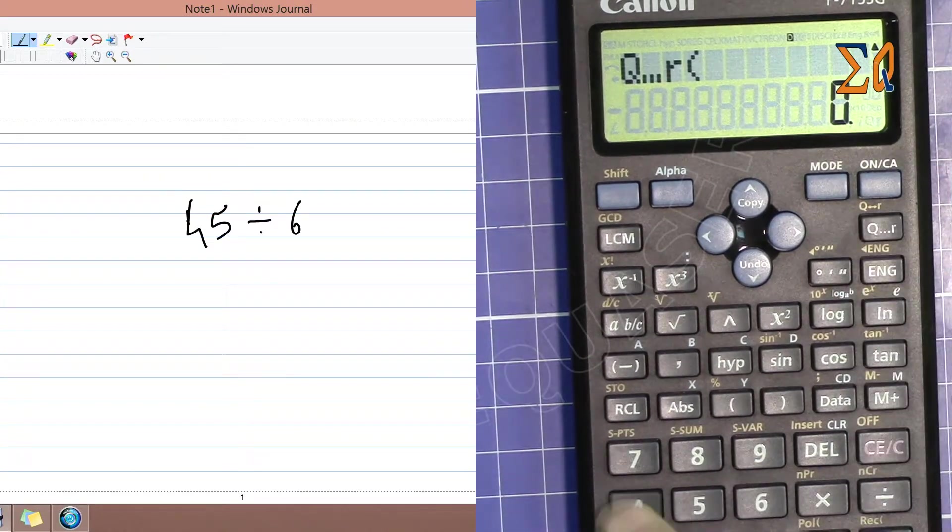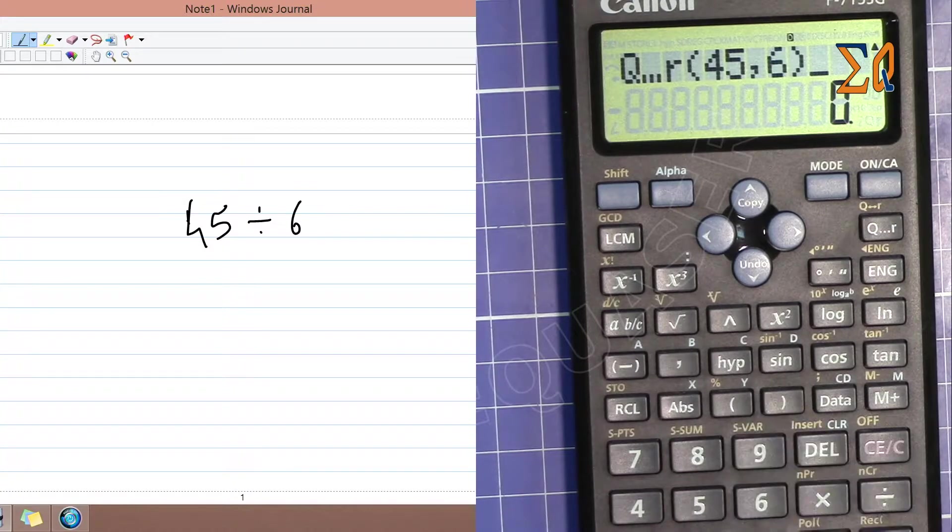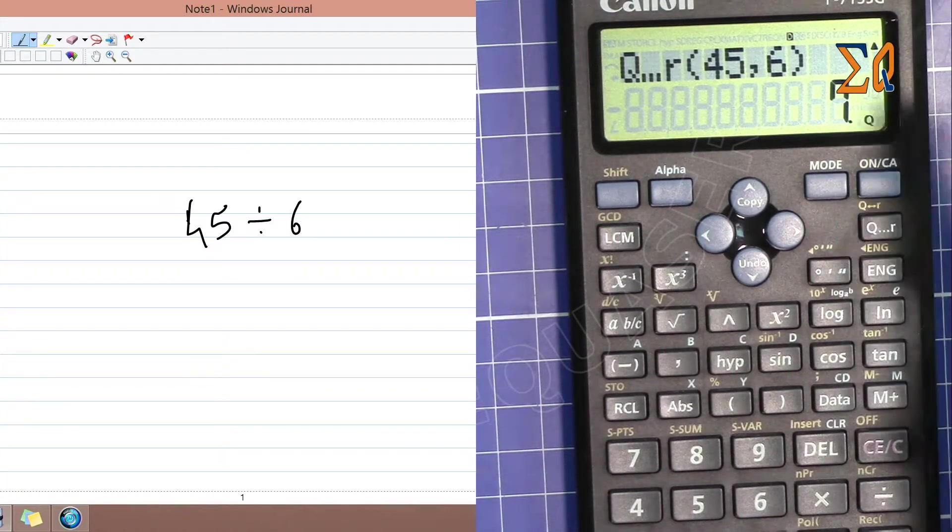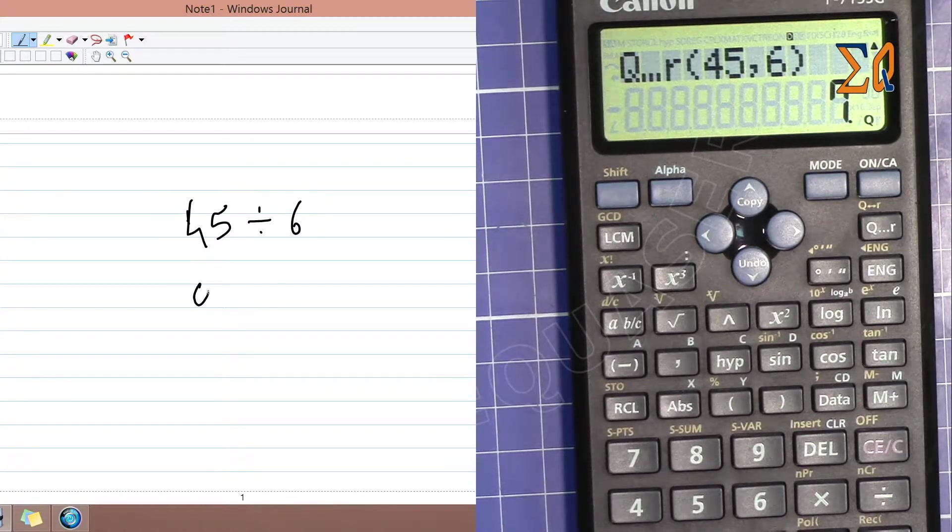So we got quotient is 7, and then for the remainder, press Shift. The remainder is 3.